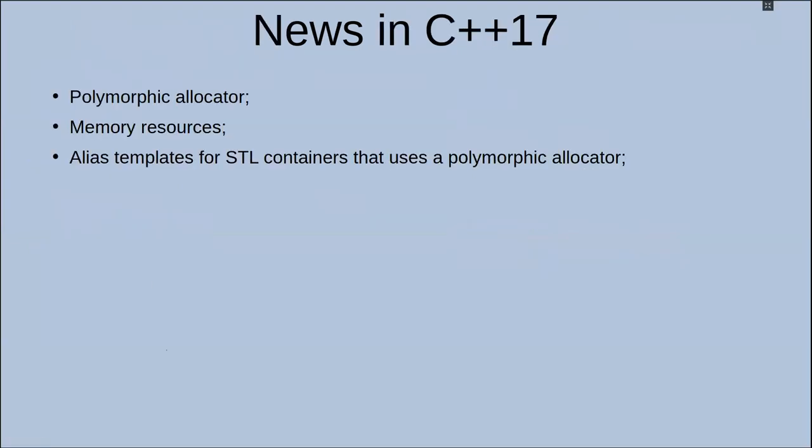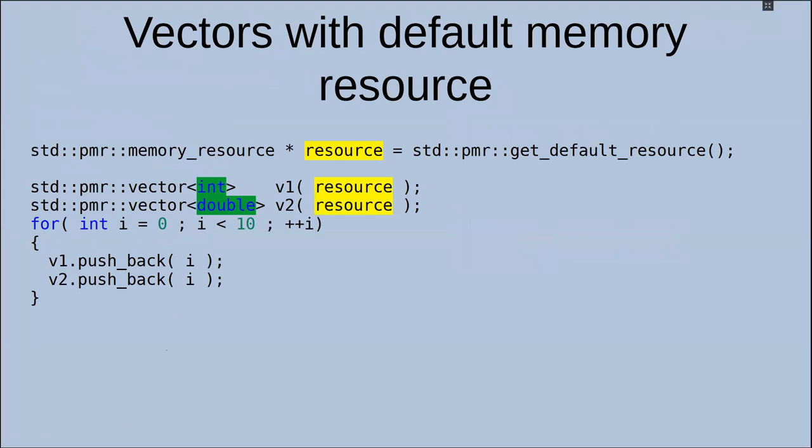What's new in C++17? We have a polymorphic allocator, memory resource and some aliases for STL containers. In C++17, you can see we just use some resource and we set resource in each vector. I use a default resource that uses operator new delete and pass it to containers.